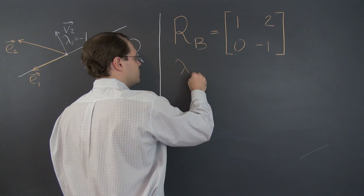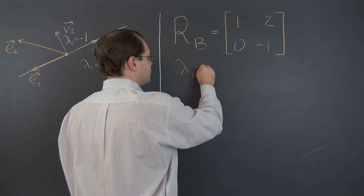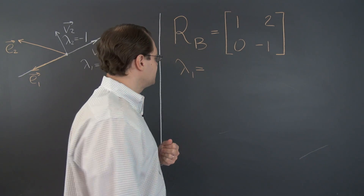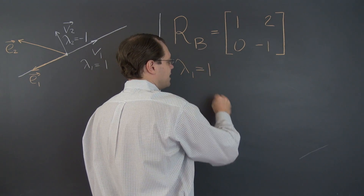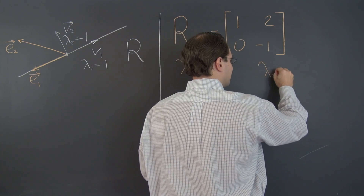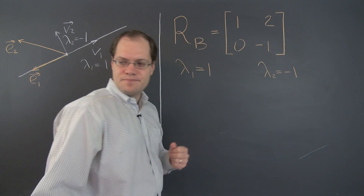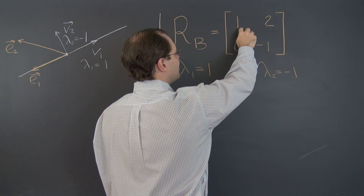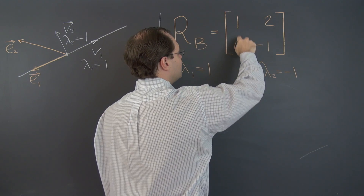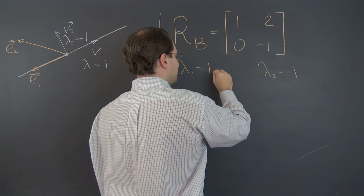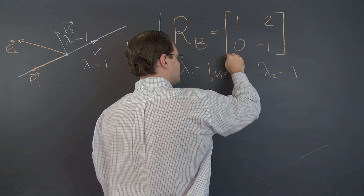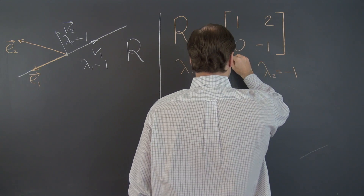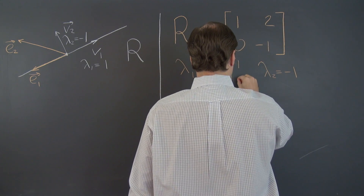The eigenvalues appear on the diagonal because it's an upper triangular matrix, making eigenvalue analysis quite simple. The first eigenvalue is 1 and the second is negative 1. The first eigenvector is easy to determine because this 1 is alone in its column and on the diagonal — the corresponding eigenvector is (1, 0).